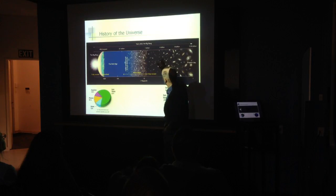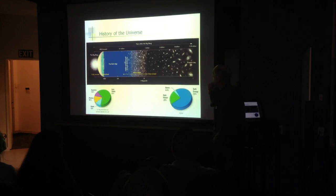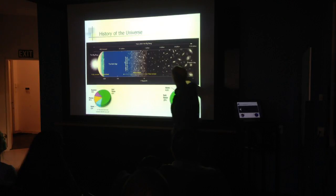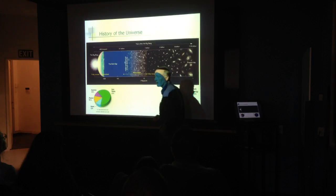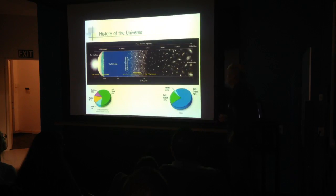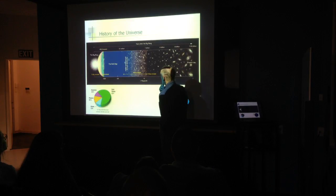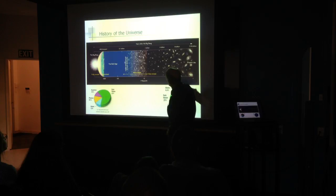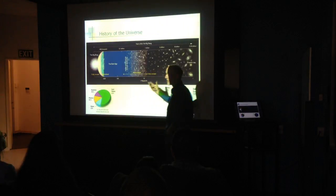Looking backwards in time, the furthest you can look back at the moment — Hubble probably holds the record — is to about 400 million years after the Big Bang. They can detect faint galaxies and, because of the redshift, can tell they're around 400 million years old. So we can't look back far enough yet to see the very first stars, but we can at least see the first primitive galaxies that we know contained stars.